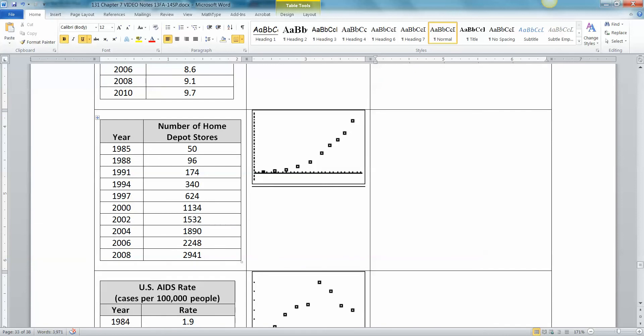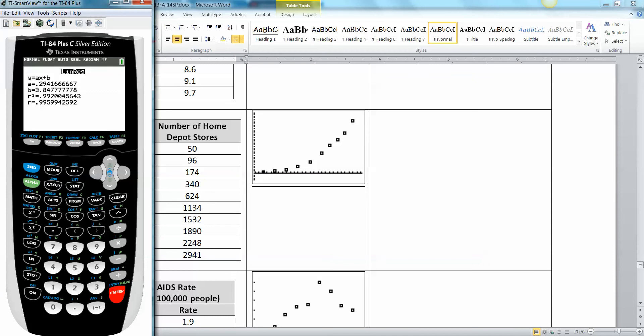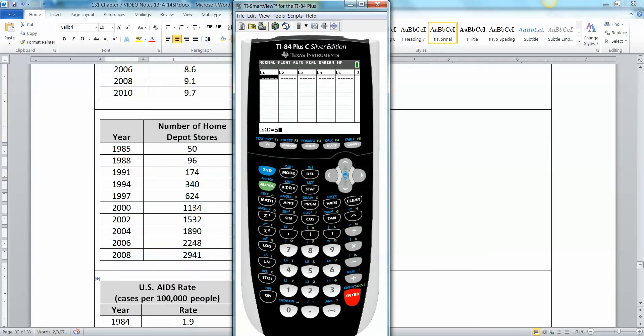Now what about the next points? That looks pretty much like an exponential. I mean, it could be a quadratic, half a parabola as well, but I say we go with exponential. So let's make 1980 our starter year since we're starting off with 85. So let's go here, stat, edit, clear out the old. And then what were my years? 5, 8, 11, 14, 15, 20, 22, 24, 26, 28.